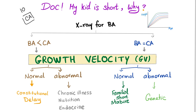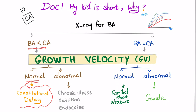If the bone age comes in less than the chronological age — for example, bone age of 8 instead of 10 — the next step is to assess the growth velocity, the slope of the curve. If the child is growing parallel to the percentile curves, the growth velocity is normal, and this is called constitutional delay. If the growth velocity is abnormal and not parallel to the curves, it's likely chronic illness, nutritional deficiency, or endocrine disease.